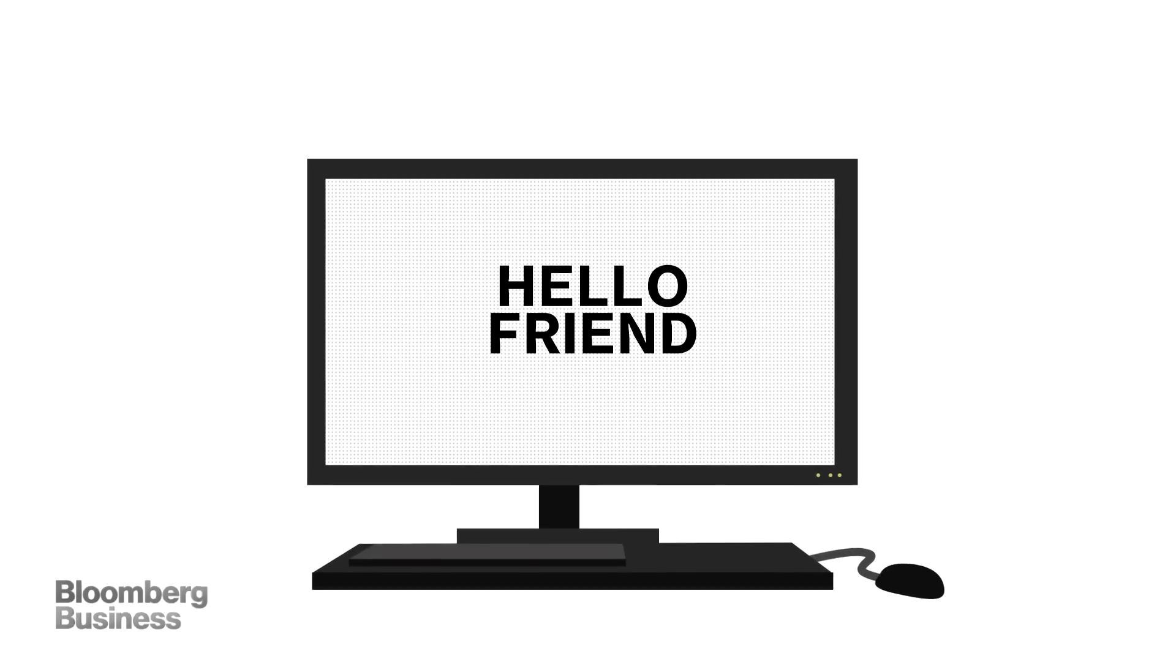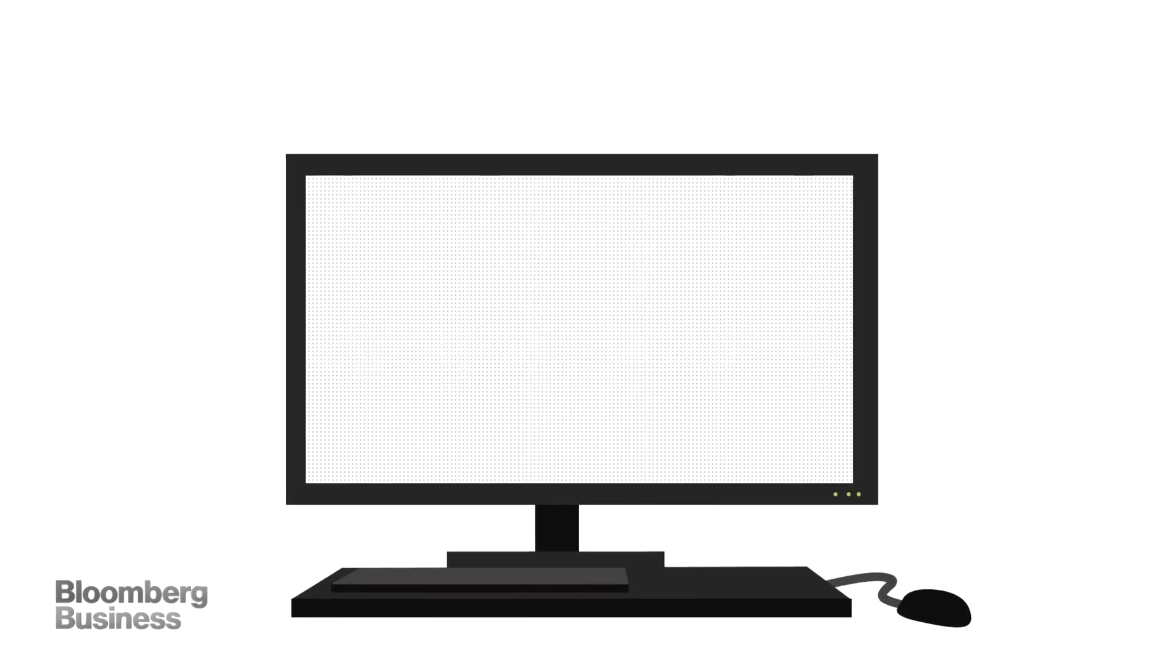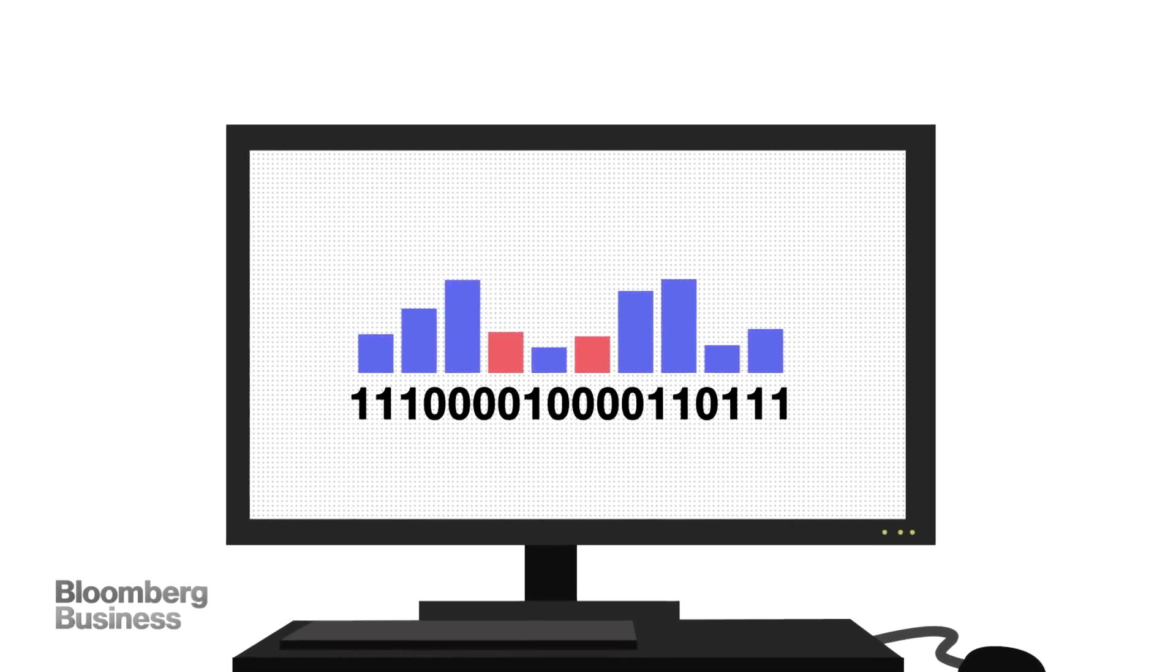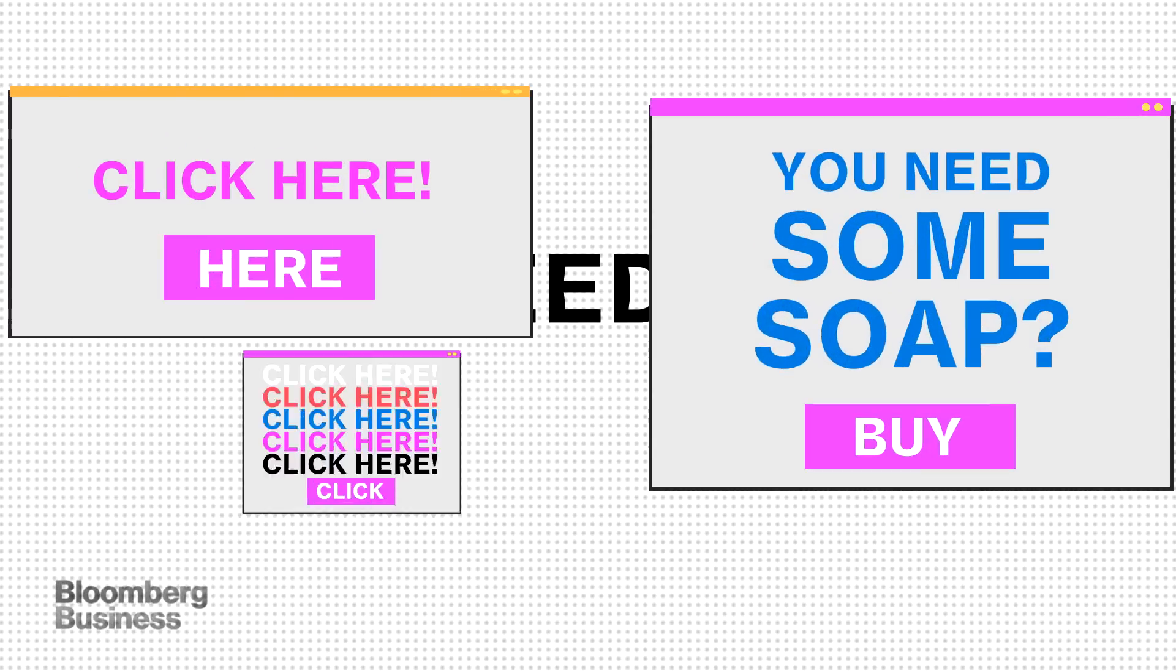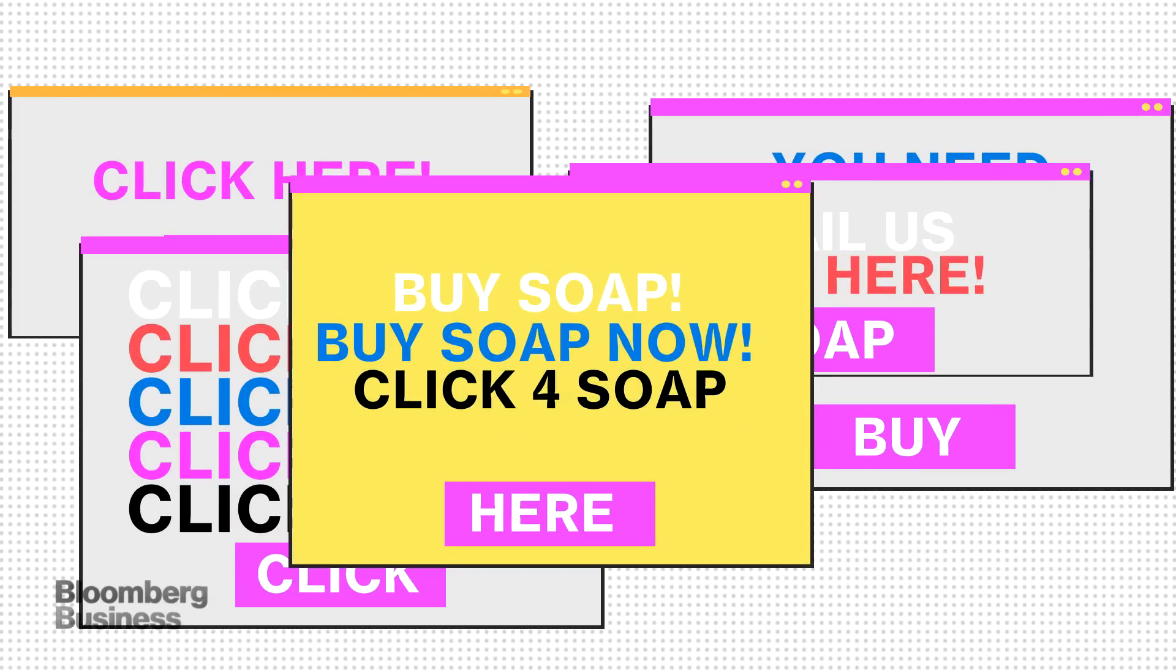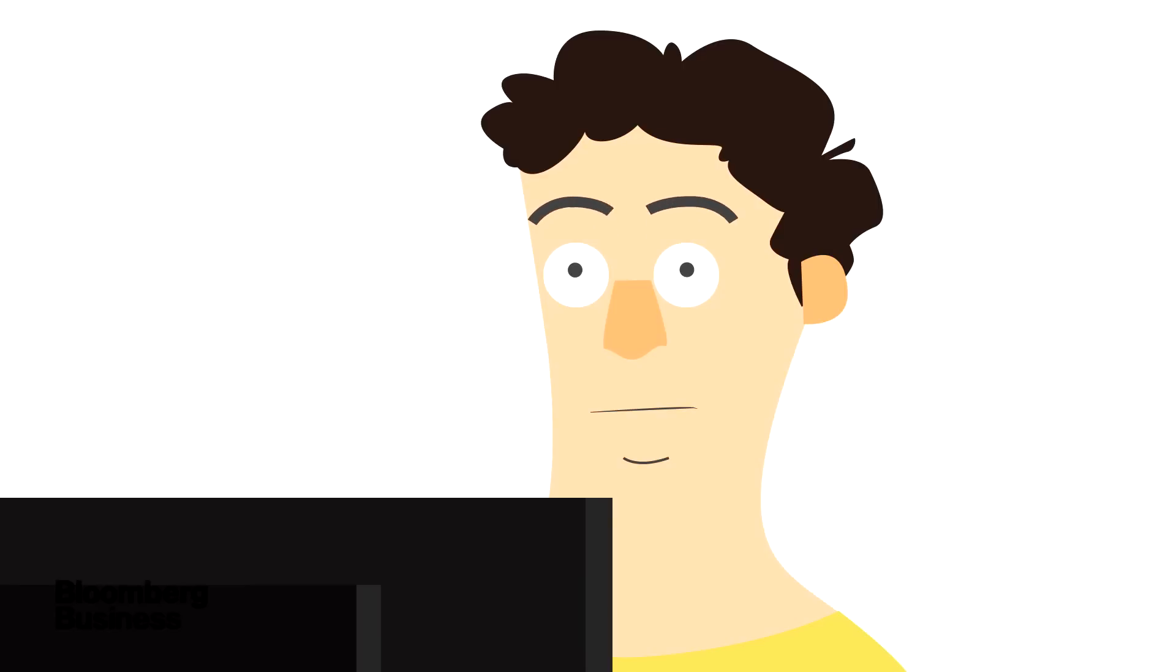Then came the internet. It promised technology that would turn advertising into a data-driven science. A soap maker can now buy thousands of spots directly targeting the very people who are most likely to buy soap at exactly the moment when they need that soap. The internet could finally make advertising efficient.